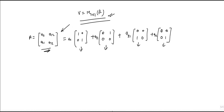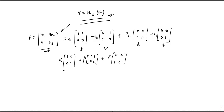Now let's check if these matrices are linearly independent. So let α·[1,0;0,0] plus β·[0,1;0,0] plus γ·[0,0;1,0] plus δ·[0,0;0,1] equal to zero. This is the way of checking linear independence.